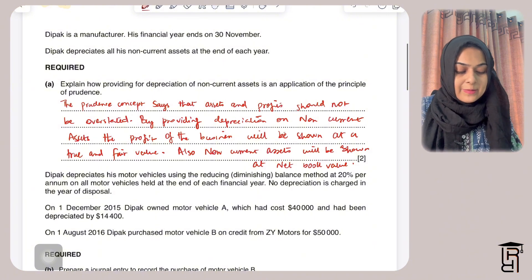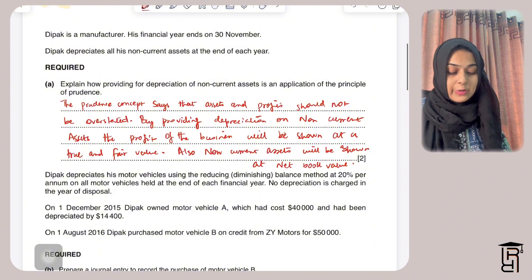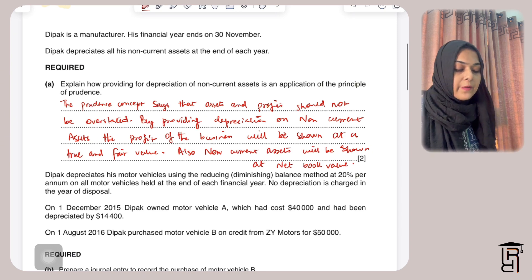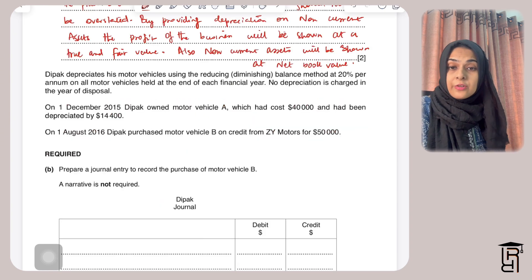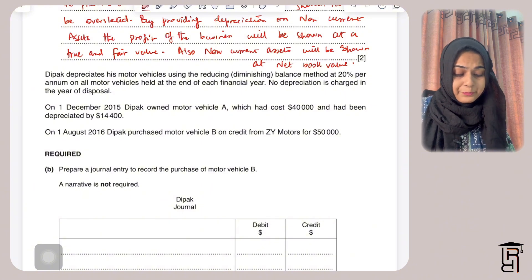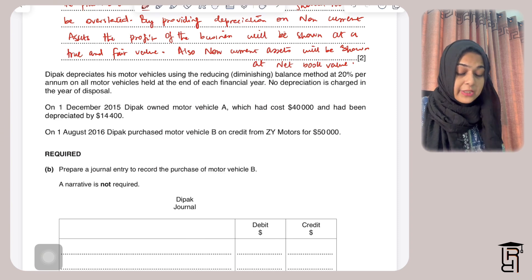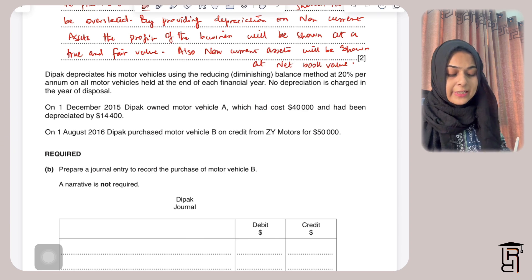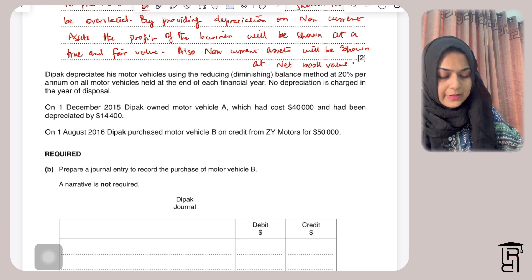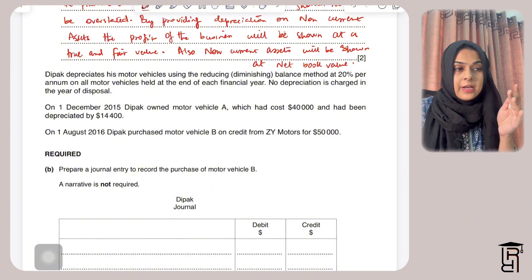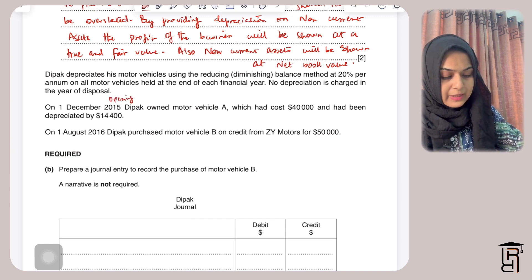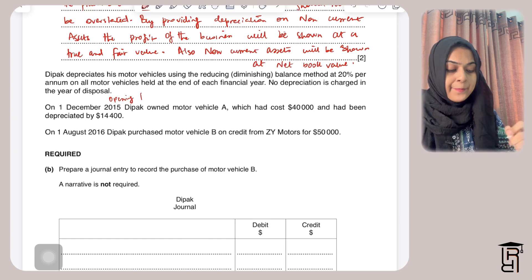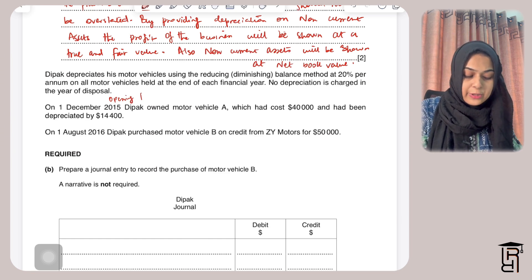Deepak depreciates his motor vehicles using the reducing balance method at 20% per annum on all motor vehicles held at the end of the year. No depreciation is charged in the year of disposal — so the policy is full year's depreciation in the year of purchase and none in the year of disposal. On 1st December 2015, motor vehicle A had a cost of 40,000 and accumulated depreciation of 14,400 — these are the opening balances for the year ending 30th November 2016.